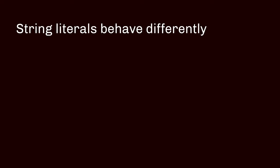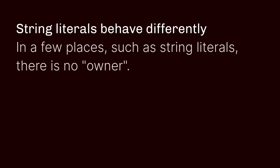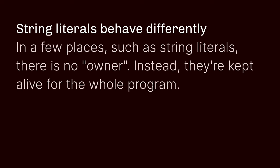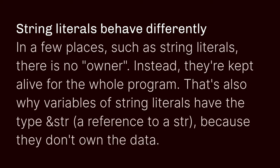There is one last special case: data without an owner. The place where you're most likely to encounter this is string literals — they behave slightly differently. There are a few places in Rust code where there is no owner; instead, the data is kept alive for the whole program. This is why variables of string literals have the type &str — a reference to a str, formally called a string slice — because they don't actually own the data they refer to, even if they are the only variable that refers to a literal.